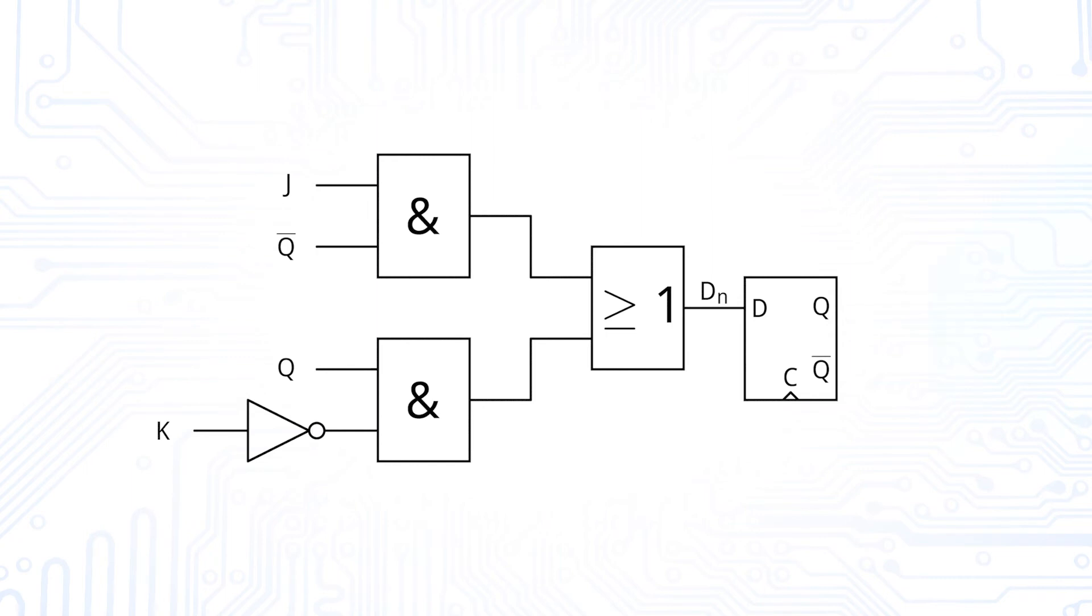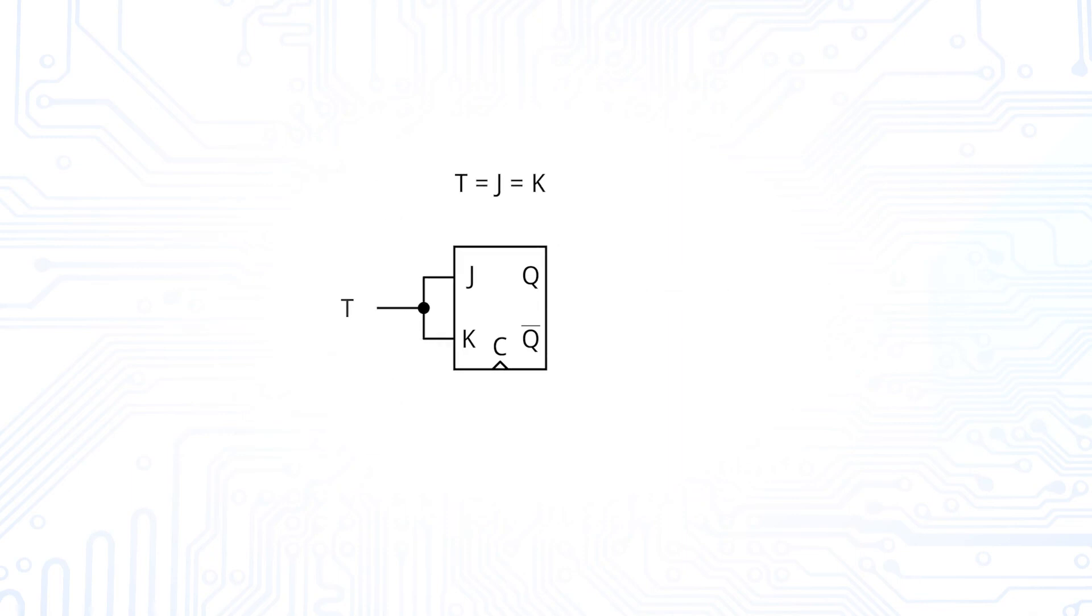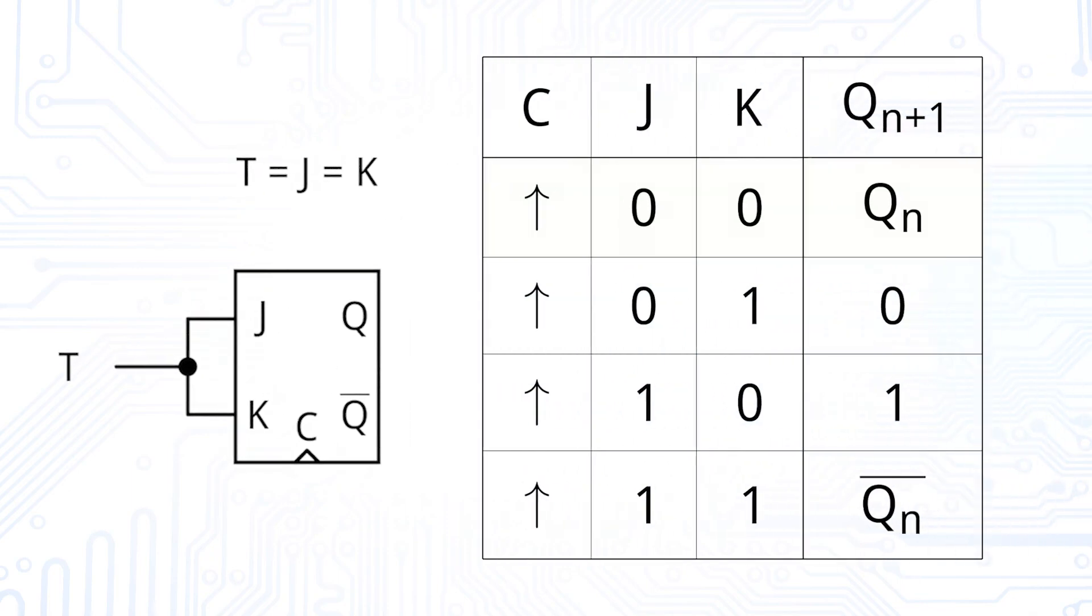When we have a J-K flip-flop, we can create a toggle flip-flop by simply connecting both inputs J and K to the same signal.